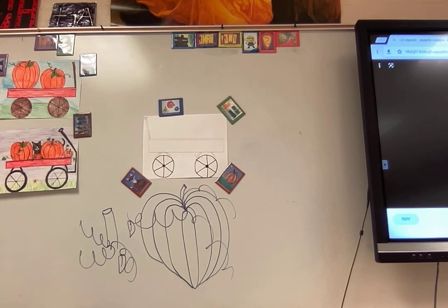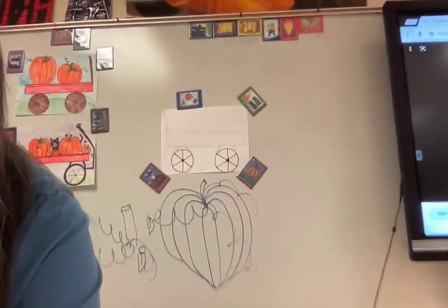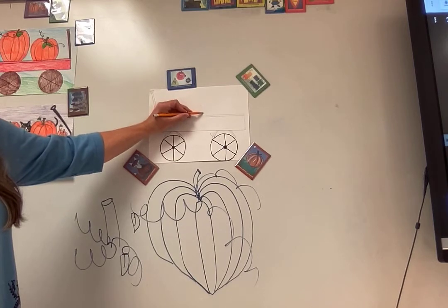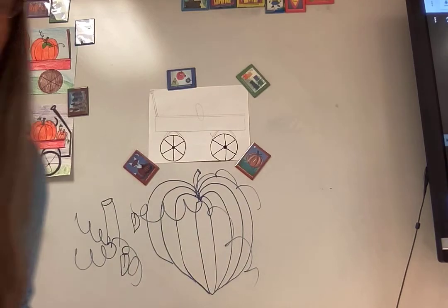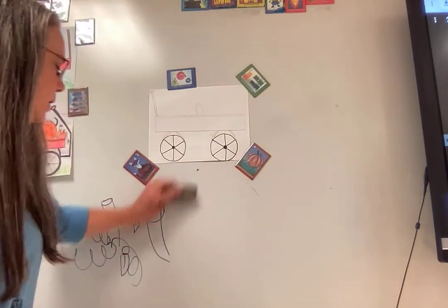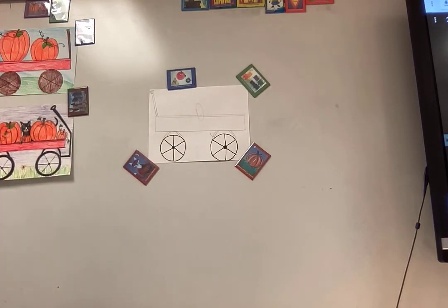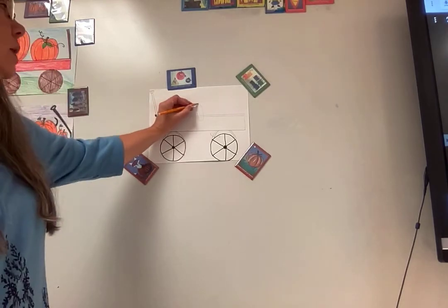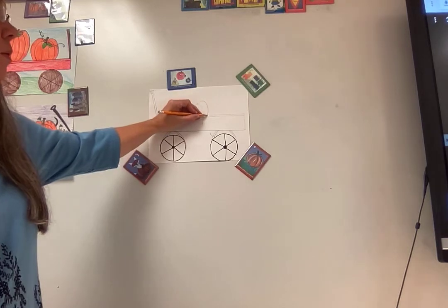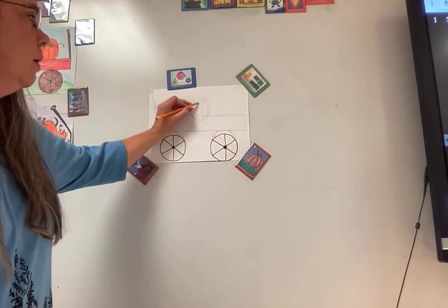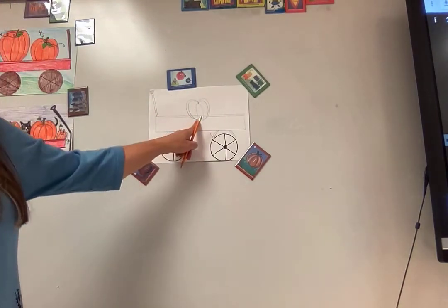Now we're going to draw our pumpkins in the wagon — that was just practice. I'm going to draw one so it looks like the bottom is inside the wagon and not floating above it. I'll start with the oval in the middle and make it go down into the rectangle shape so the bottom of the oval is inside the wagon body. Then draw curvy lines from the top, up and around for each section. I'm drawing the whole pumpkin, even the part that will be hidden inside the wagon.